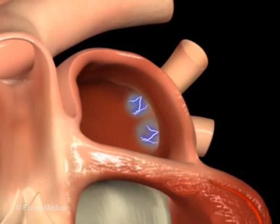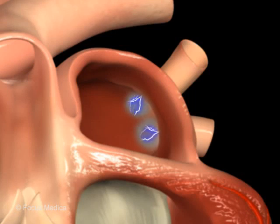These lesions heal, leaving a circular scar around the veins, blocking any impulses arising from them.